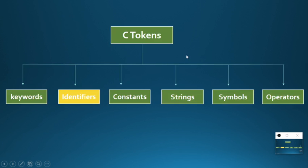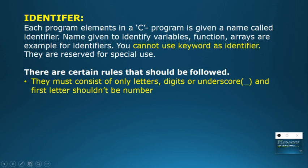Coming to our next token: identifier. An identifier is the same as a variable name — the same rules which apply to identifiers also apply to variables. The first rule is: it must contain letters, digits, or underscores, and the first character should not be a number.